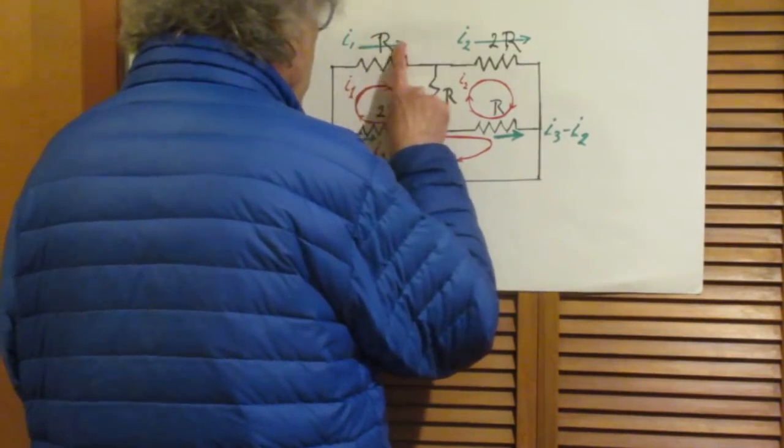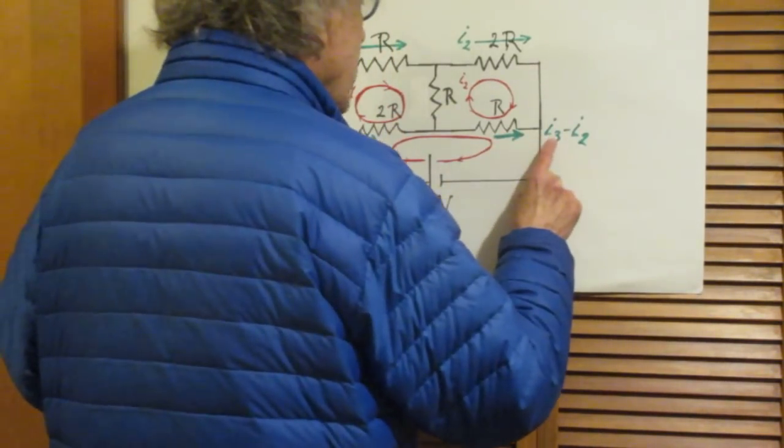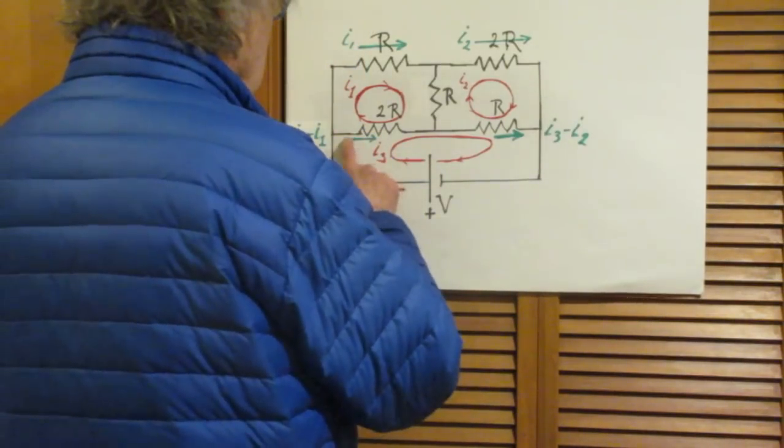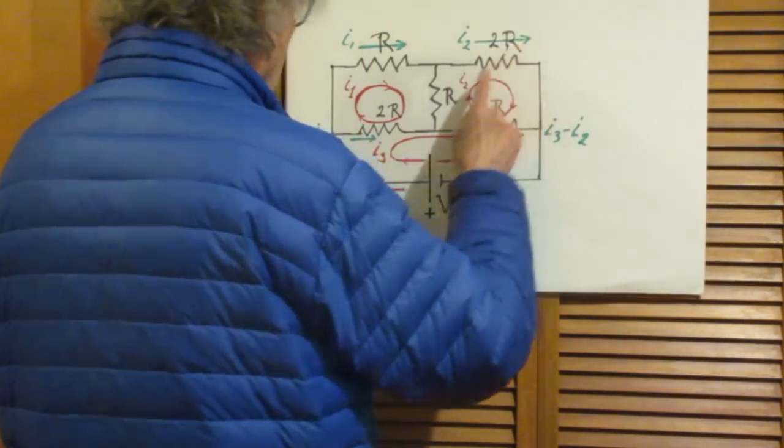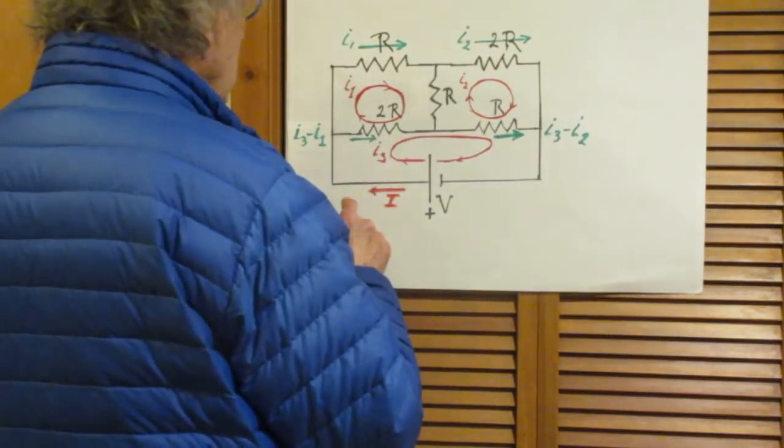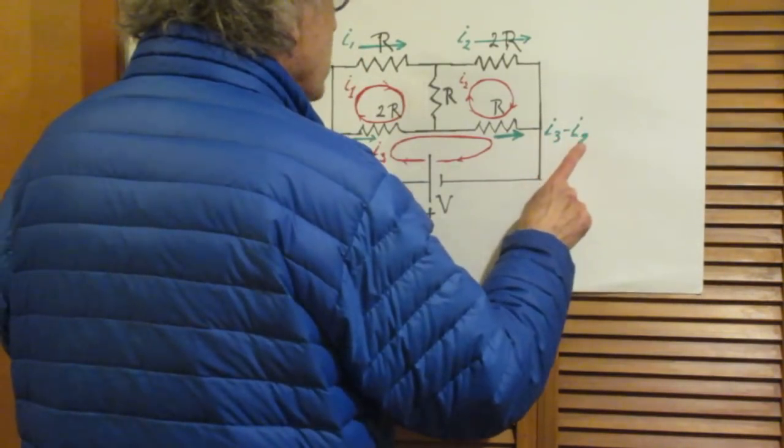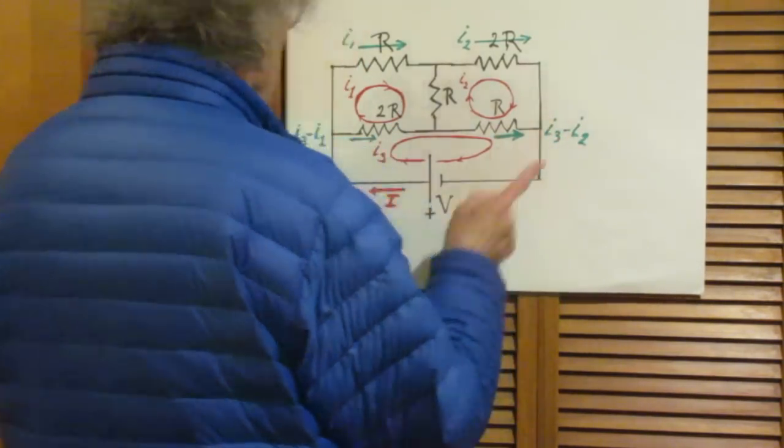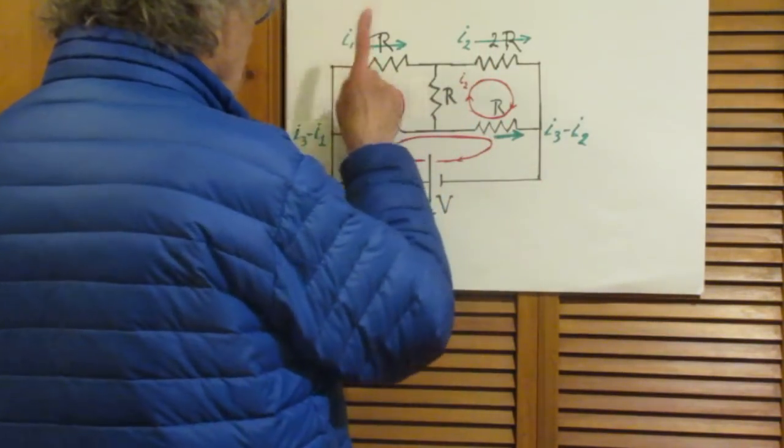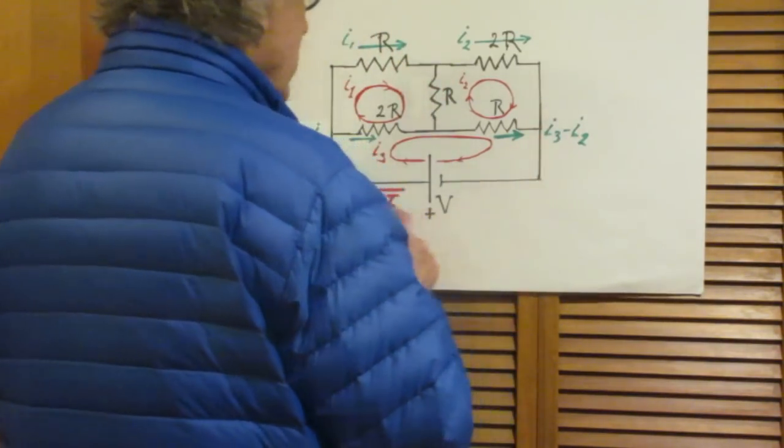So if this current is the same as this current, then I1 must be the same as I3 minus I2. And if this current is the same as that current, then I3 minus I1 must be the same as I2. Notice that I1 equals I3 minus I2 is identical to the statement I3 minus I1 equals I2. So it is enough that you concentrate on I1 equals I3 minus I2.